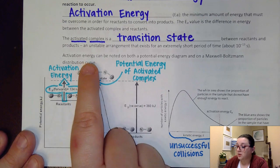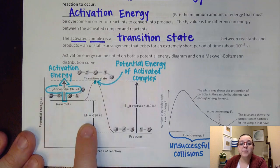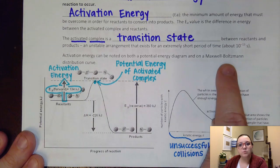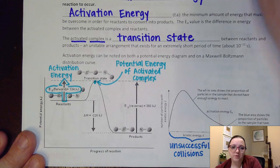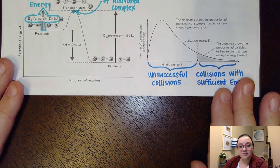It says here that activation energy can be noted both on a potential energy diagram, which is this guy right here, but also on a Maxwell-Boltzmann distribution curve. I know you thought you were done with these lovely curves, right? It's been a while since we talked about these since gas laws.